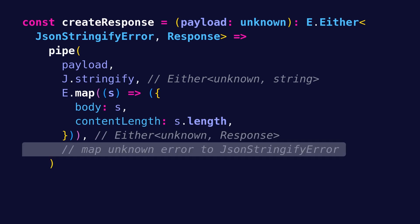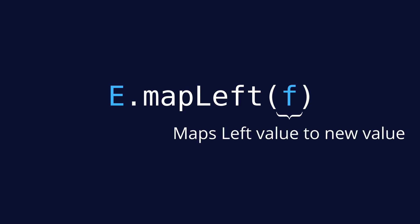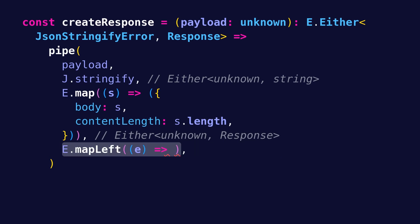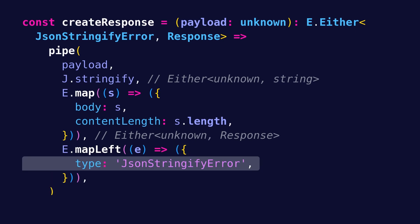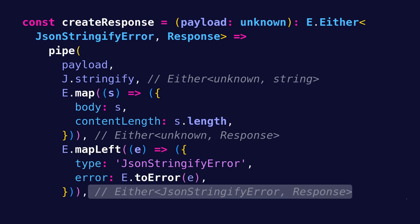The next thing that we need to do is to map the unknown error into a proper JSONStringifyError. This can be accomplished using the Either.mapLeft util, which takes a function that maps the Either's left value to a new value. Of course, this mapping is done only if we have an Either Left — if we have a Right, mapLeft does nothing. So going back to createResponse, we can mapLeft the unknown error into the JSONStringifyError, which is an object with type JSONStringifyError and the raw error converted from unknown to an Error object. So now we have an Either JSONStringifyError or Response, which is exactly what we want.